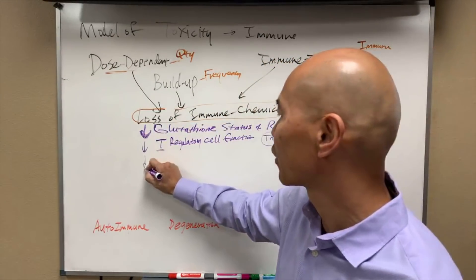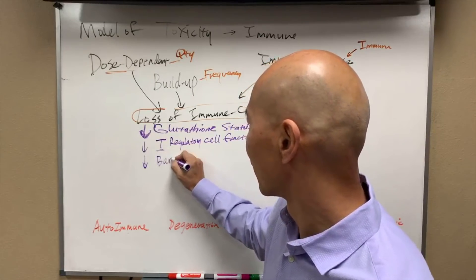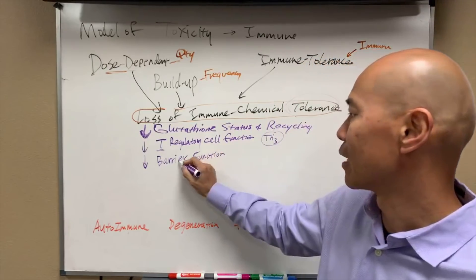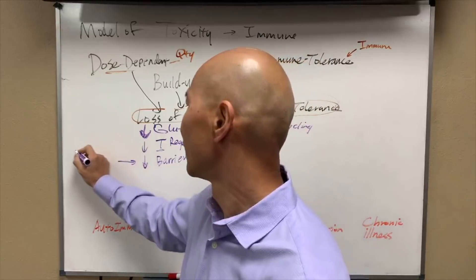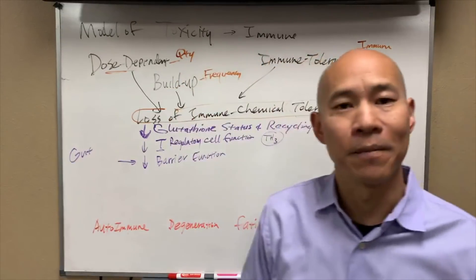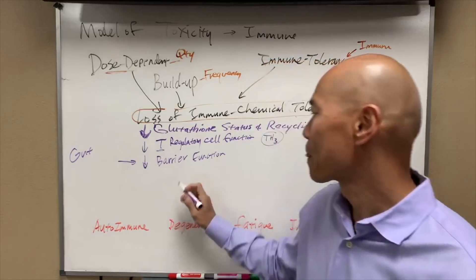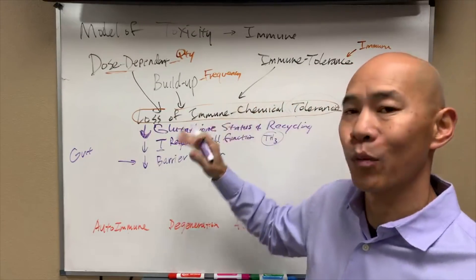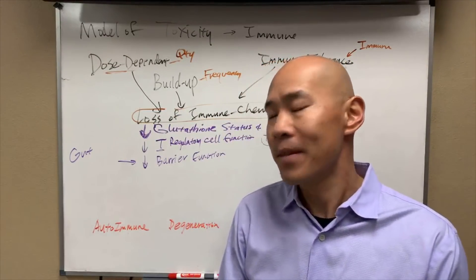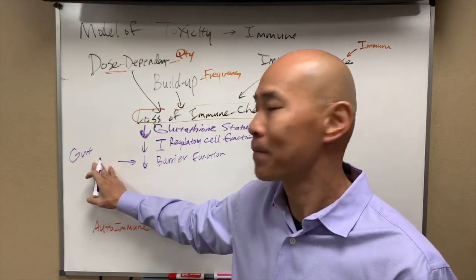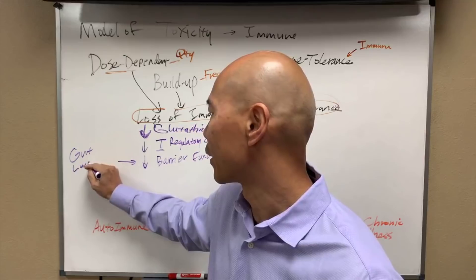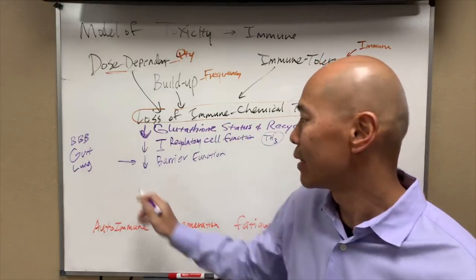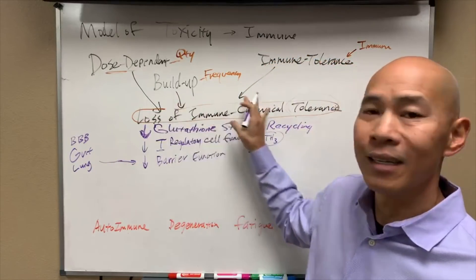When you have loss of immune chemical tolerance, you also get decreased barrier function. We're talking about the gut barrier — with the gut being 70% of your immune system — as a barrier system that protects you. This loss of tolerance creates inflammation that eventually degrades the gut barrier, and that includes the lung barrier and the blood-brain barrier. These barrier systems can all become compromised due to toxicity buildup.